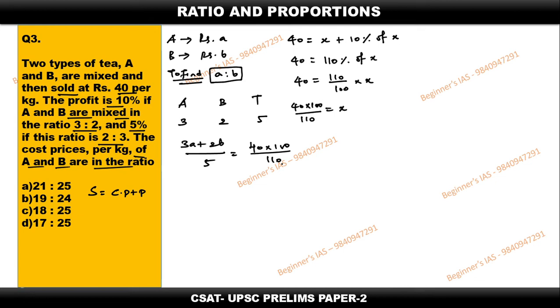Then substitute here, which means the cost price is 40 into 100 by 110. Now just cross multiply - 110 without cancelling. Therefore 110 into 3a plus 2b by 5 which is equal to 40 into 100. Don't do any simplification, just keep as it is. This is equation number one.